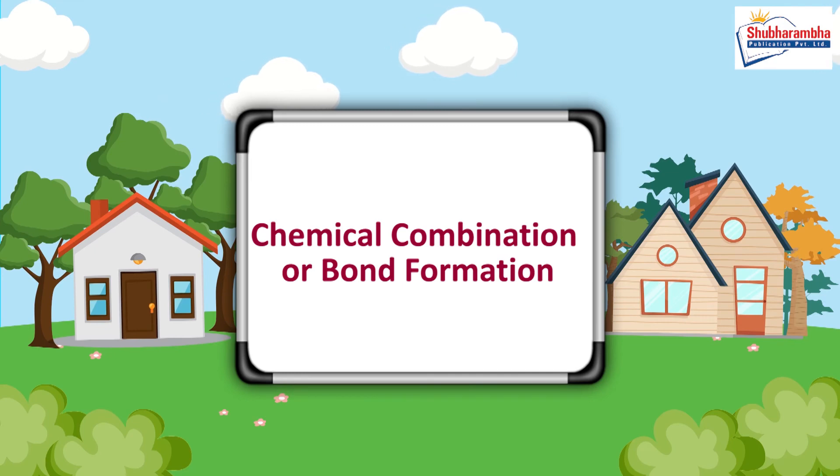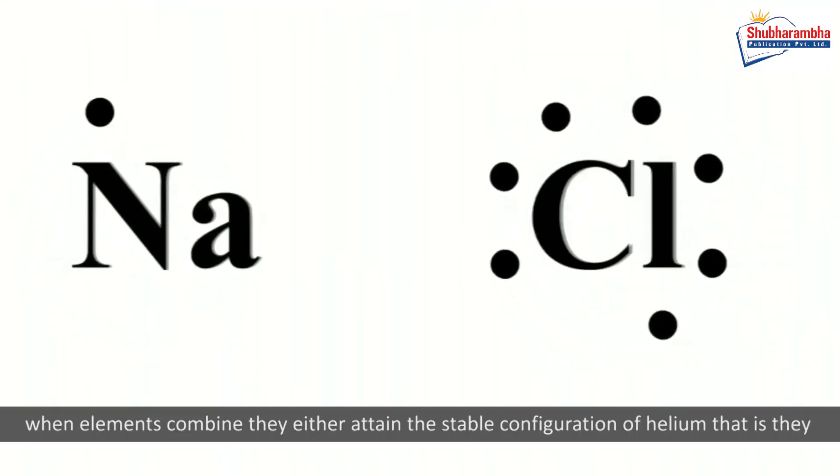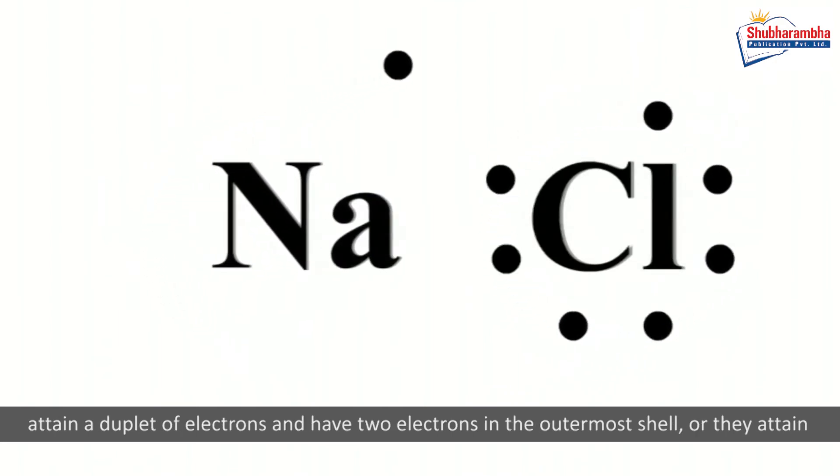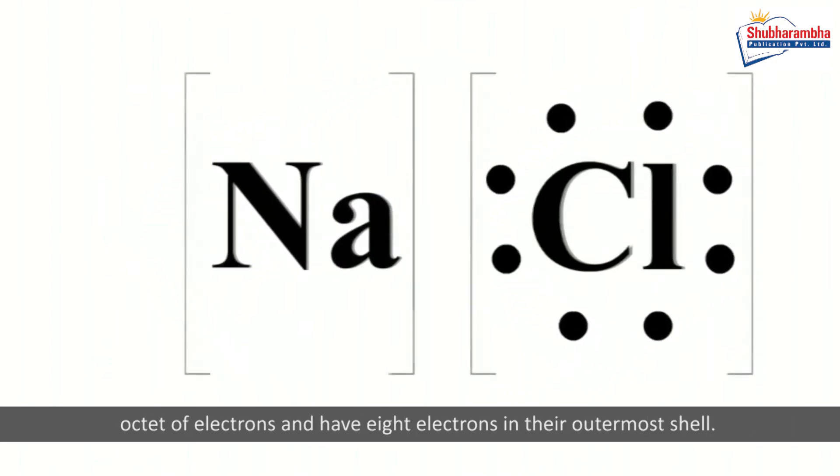Chemical combination or bond formation. When elements combine, they either attain the stable configuration of helium, that is they attain a duplet of electrons and have two electrons in the outermost shell, or they attain an octet of electrons and have eight electrons in their outermost shell.